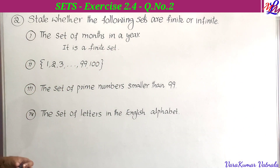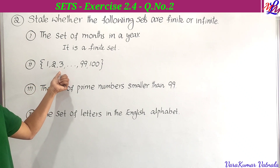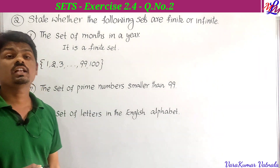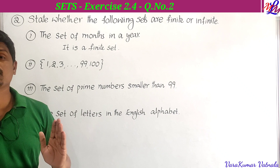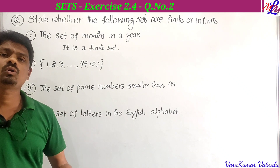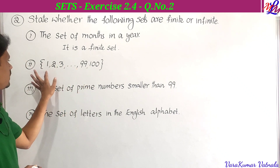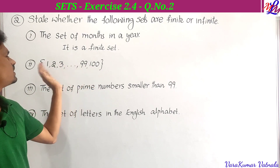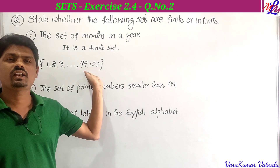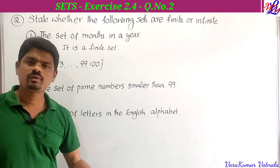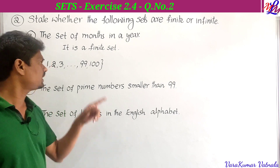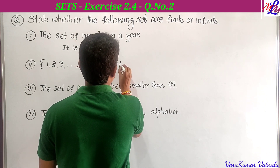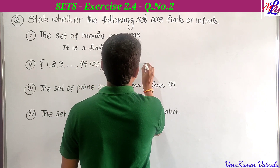The second bit: the set {1, 2, 3, ..., 9900}. There are 9900 elements here, which is a clear countable number, so it is a finite set.